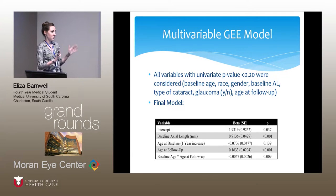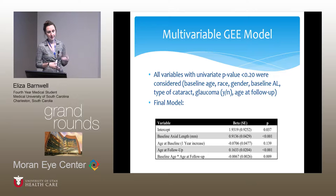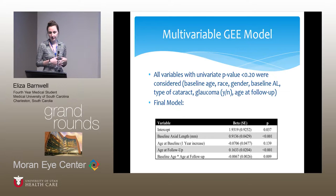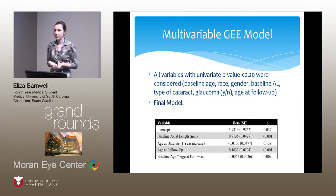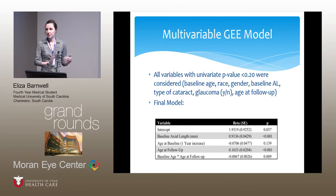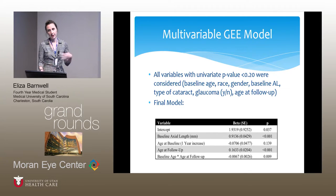All variables with a univariate p-value less than 0.2 were considered in the multivariable model: age, race, gender, axial length, baseline axial length, type of cataract, whether or not they had glaucoma, and age at follow-up. In the final model, the variables that were statistically significant were baseline axial length, age at baseline, age at follow-up, and the interaction between baseline age and age at follow-up. Interestingly, race and gender were not statistically significant in the multivariable model. We believe this is because by including baseline AL and baseline age, we're accounting for those differences in gender and ethnicity.